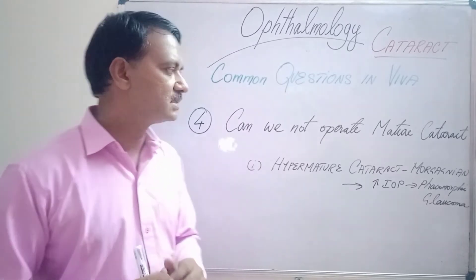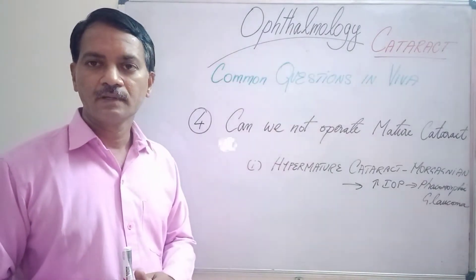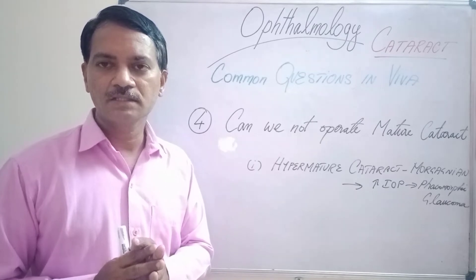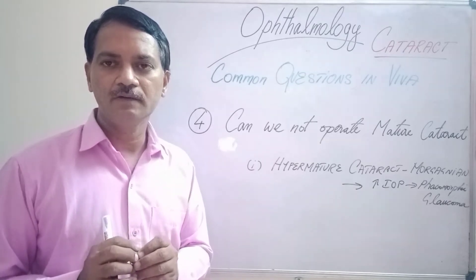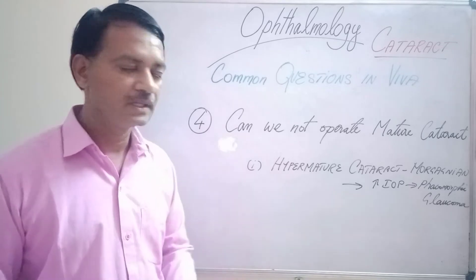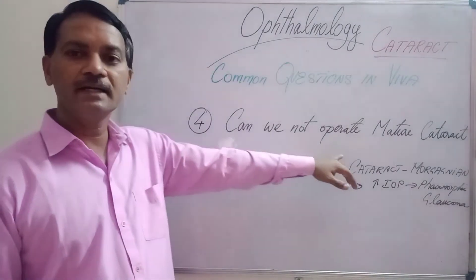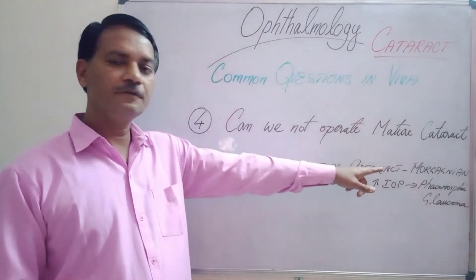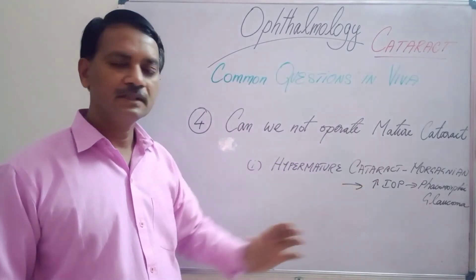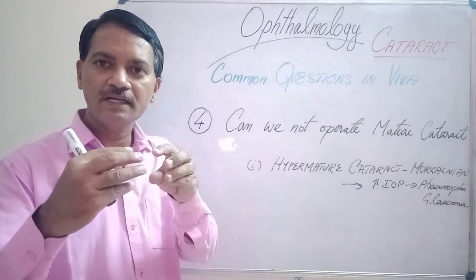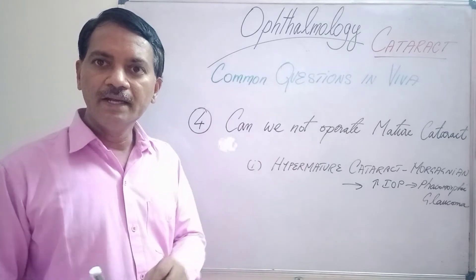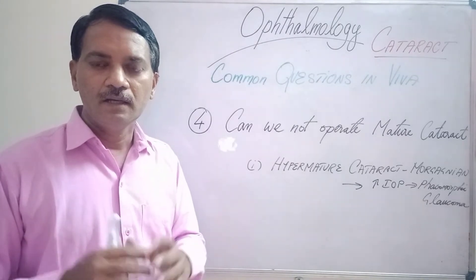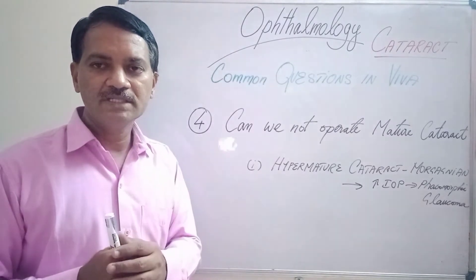Can we defer surgery for a mature cataract? Definitely not. We should not defer surgery for a mature cataract, because if it is not operated it will lead to a lot of problems. The first problem is that the mature cataract can go into a hypermature stage. If it goes into a Morgagnian type of cataract, the lens will become swollen and will obstruct the pupil, leading to increased intraocular pressure, pupillary block glaucoma, or angle closure glaucoma of a secondary type — called phacomorphic glaucoma — which will lead to damage of the optic nerve.